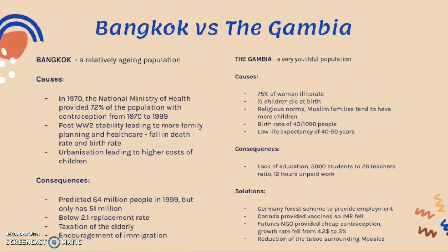In contrast, the Gambia has a very young population due to economic and social factors. 75% of women are illiterate, which signals the limited role of women in society. Due to a lack of women's emancipation and education, birth rates are higher because women lack knowledge of family planning and contraception. Additionally, one third of children die at birth.